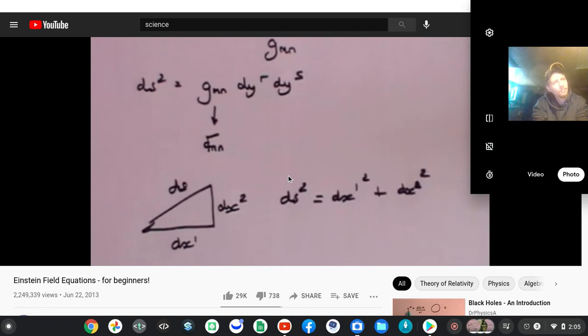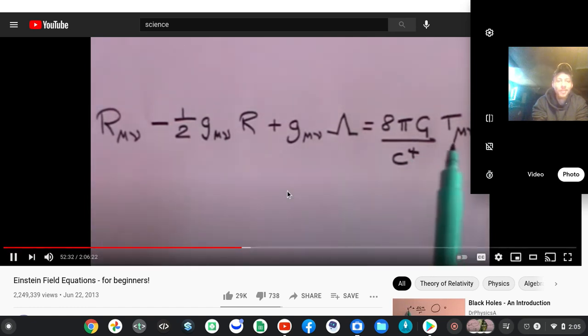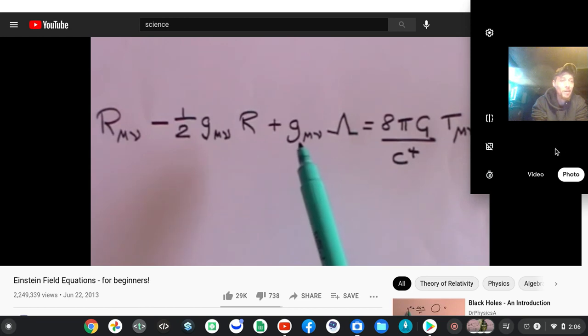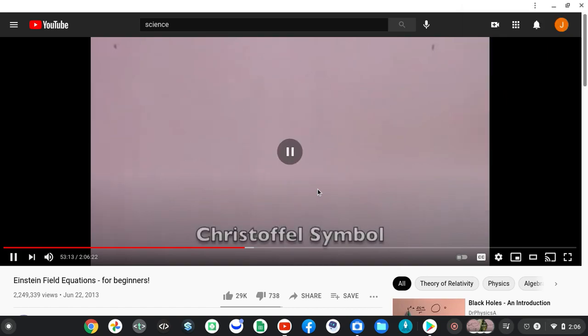So here is the Einstein field equations, or here are the Einstein field equations, and the g mu nu terms are the metric tensor. What I just derived was solely associated with space, m and n. If you want to introduce time as well, that is the metric tensor. And you may now like to take another break.